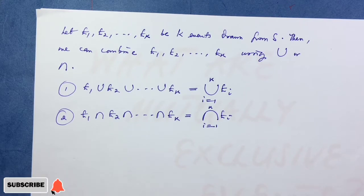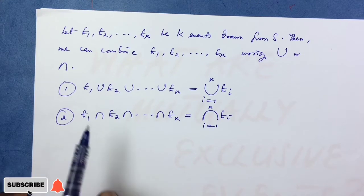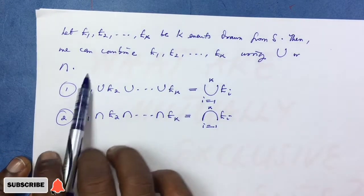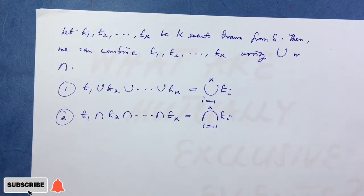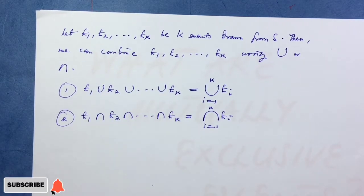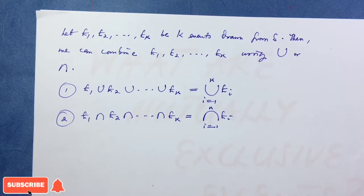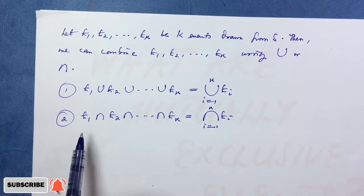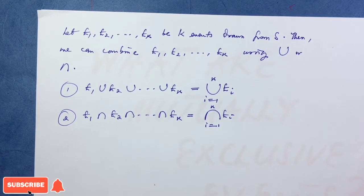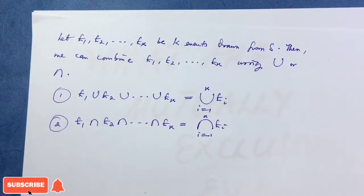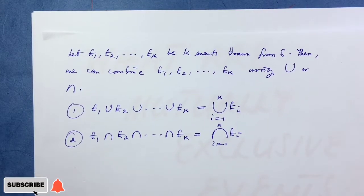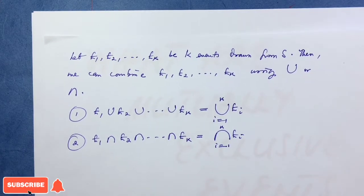It is possible to combine k event spaces using the intersection or union. The union from i=1 to k represents the event that E1 or E2 or ... or Ek or any combination of them will occur, while the intersection represents the event of all of them occurring at the same time. So two or more events can be combined — using union or intersection.